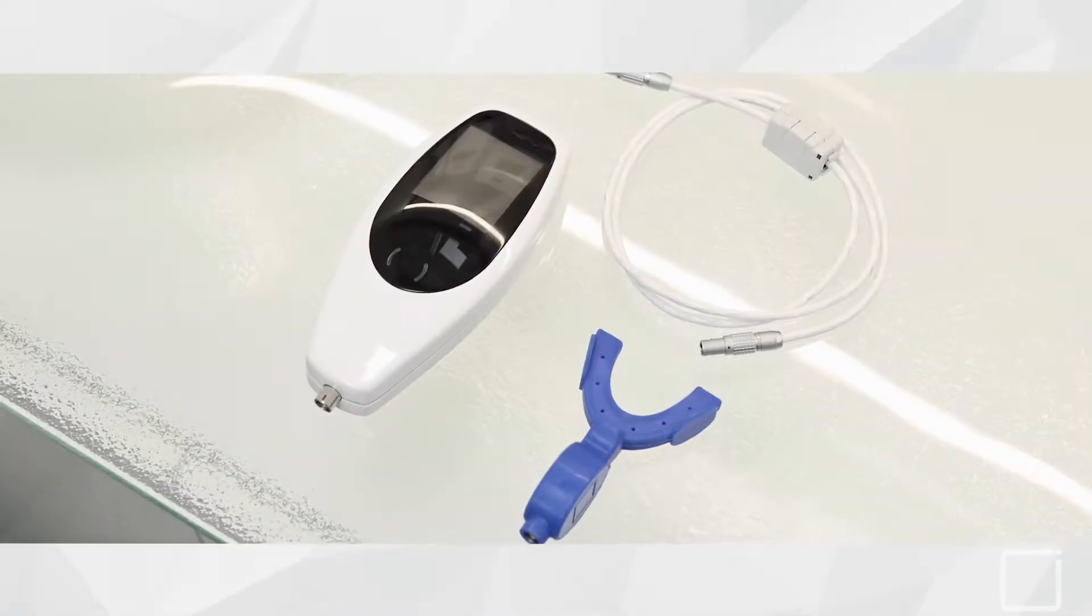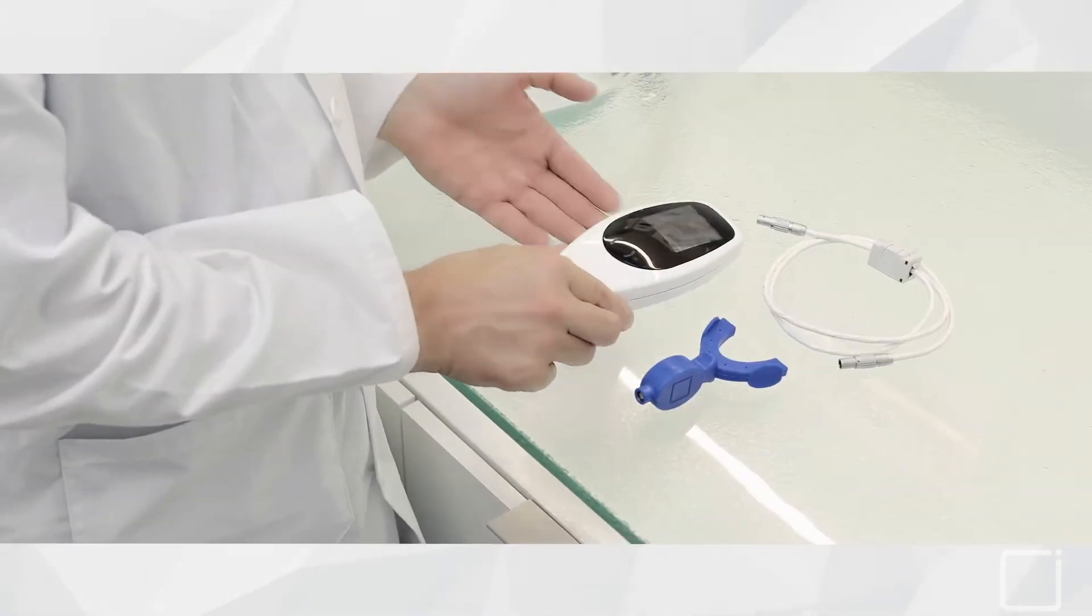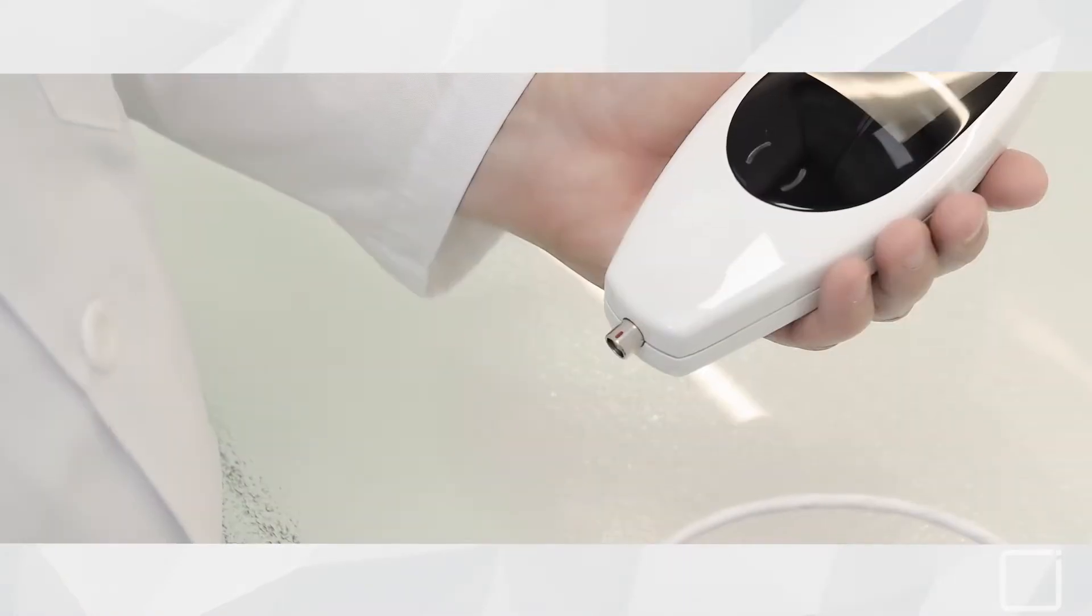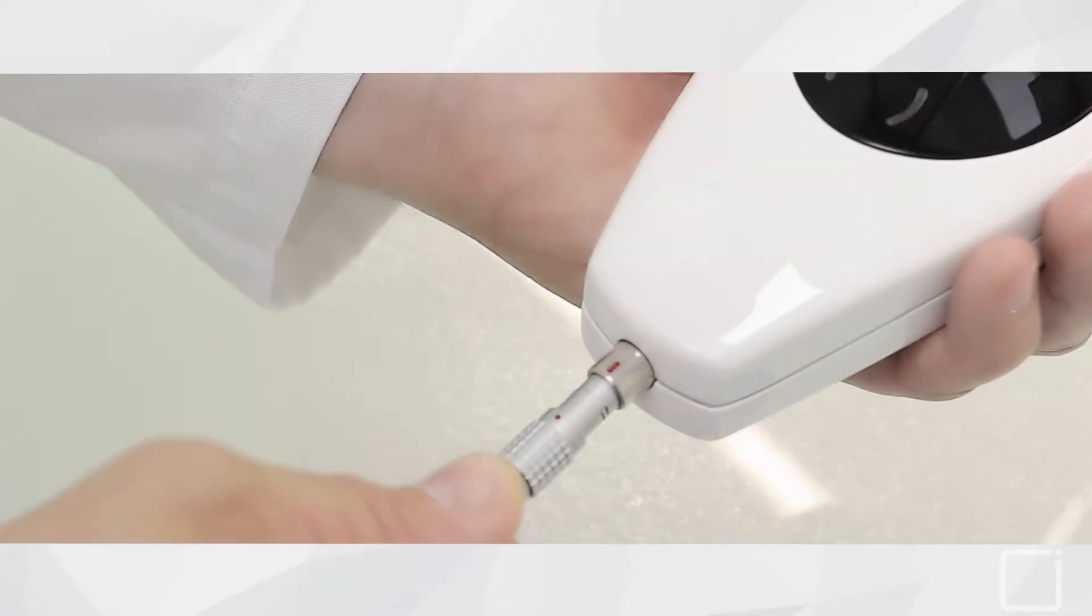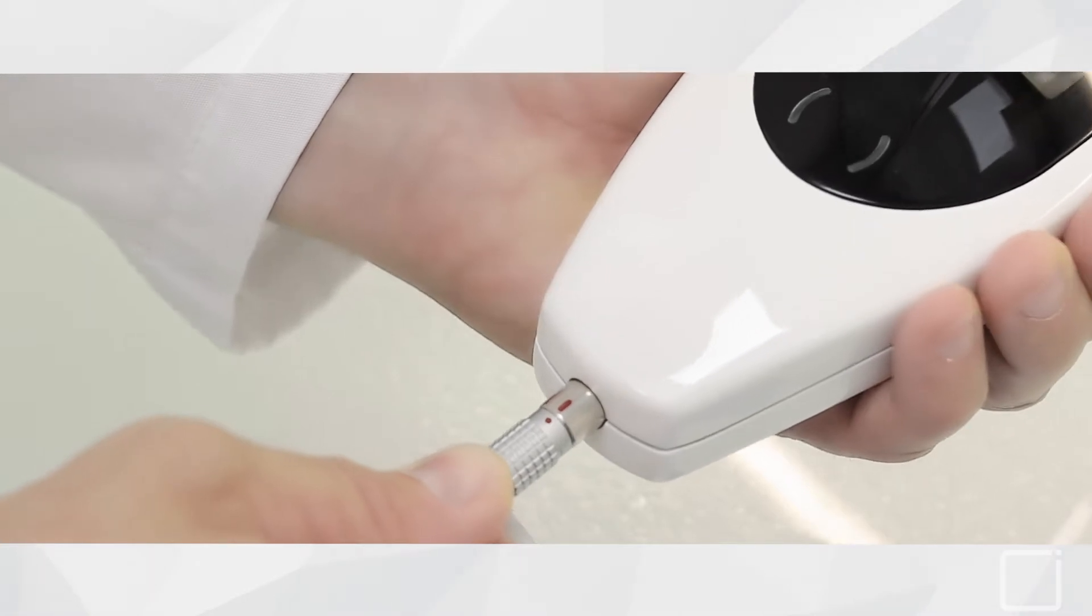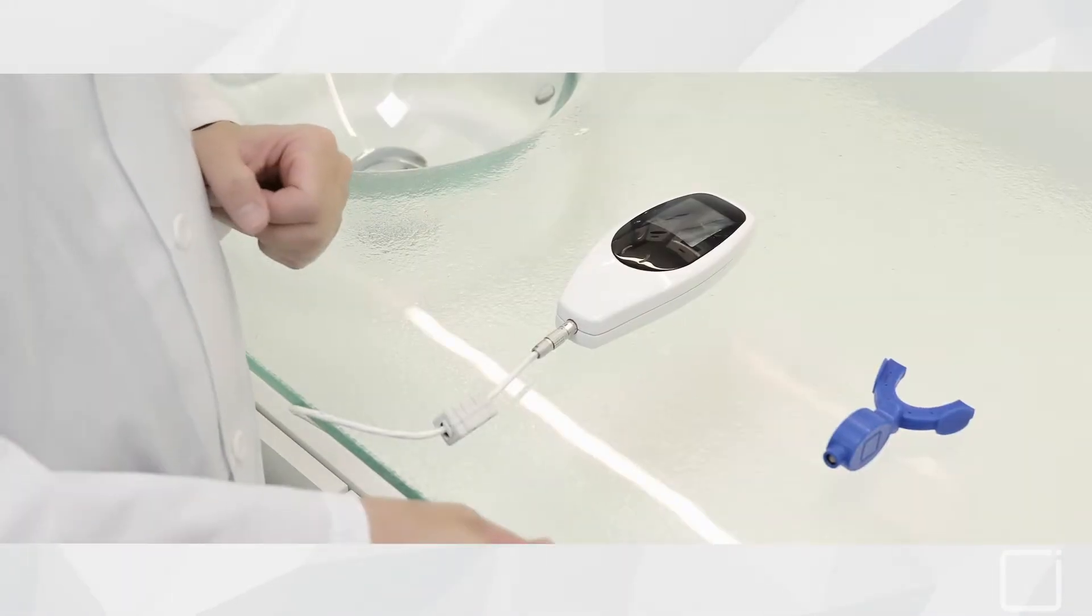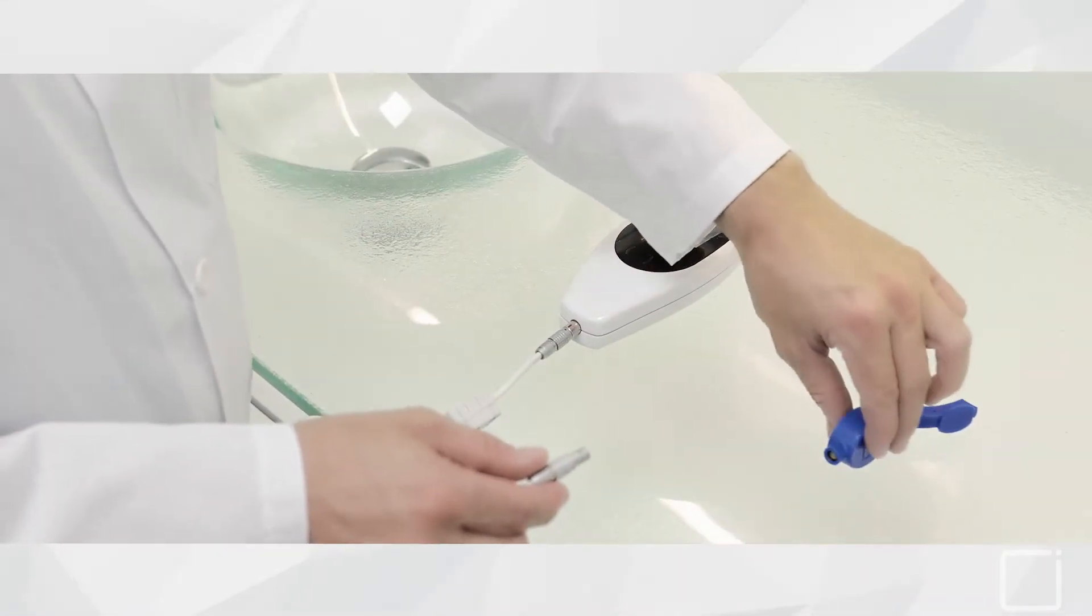The connection cable serves to connect the mouthpiece to the casing. On the handheld device, you will find a red dot indicating the precise positioning for insertion of the cable. The opposite end of the cable needs to be inserted into the mouthpiece connector.